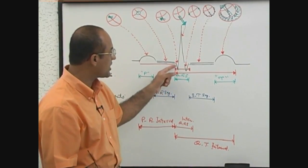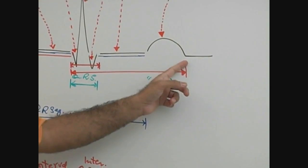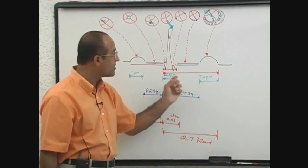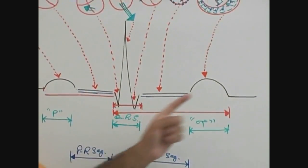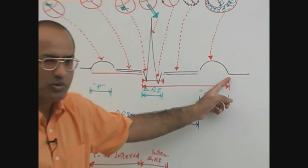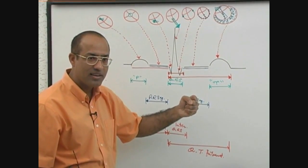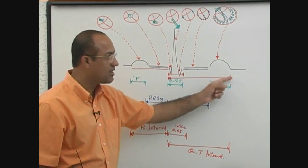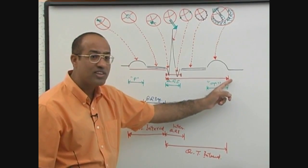Mechanically, the ventricle starts contraction at the beginning of the QRS and terminates contraction at the end of the T wave. If you want to correlate electrical events with mechanical events, the onset of the QRS marks the onset of ventricular systole and the end of the T wave marks the onset of ventricular diastole. The onset of ventricular systole closes the atrioventricular valves, producing the first heart sound (S1), and the onset of ventricular diastole closes the aortic and pulmonary valves, producing the second heart sound (S2).